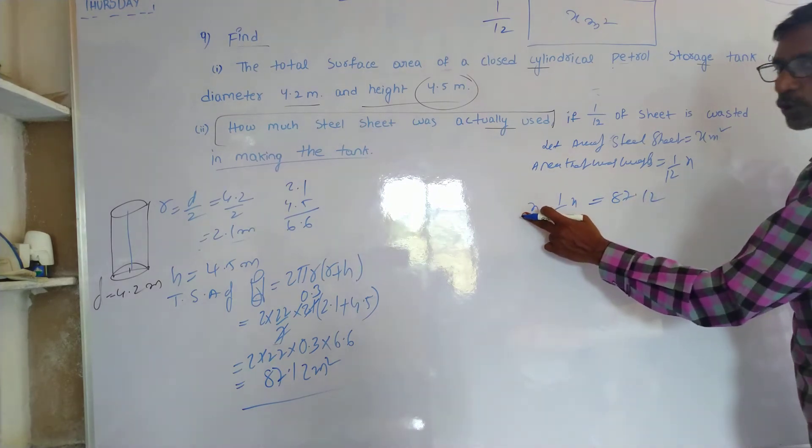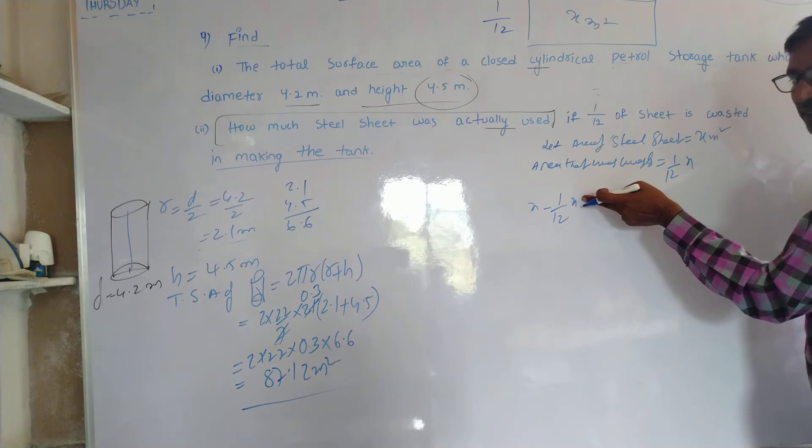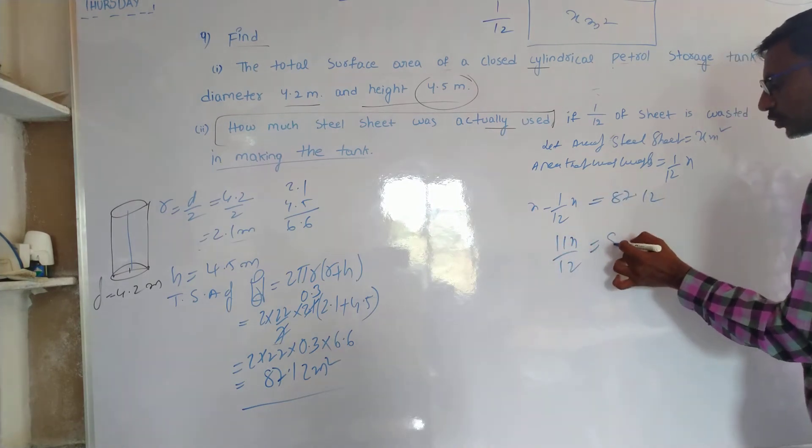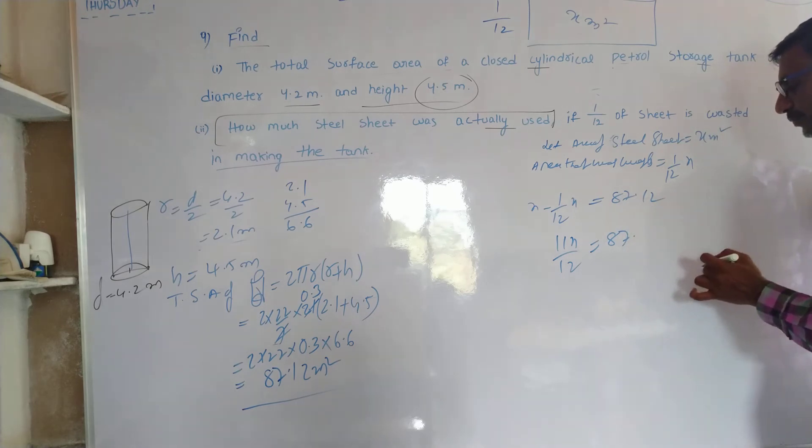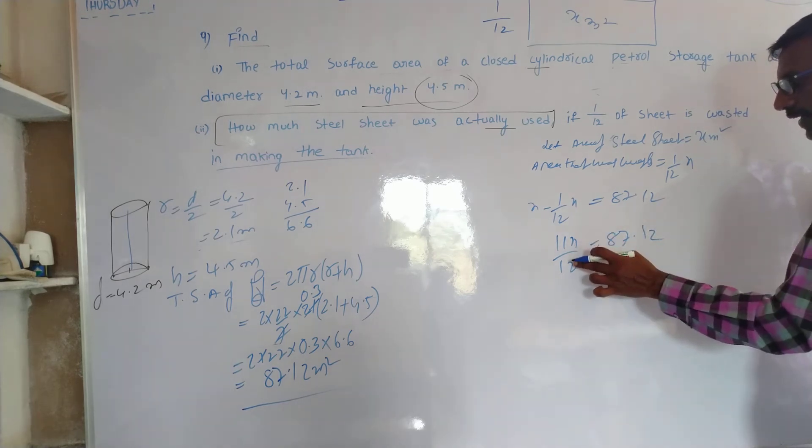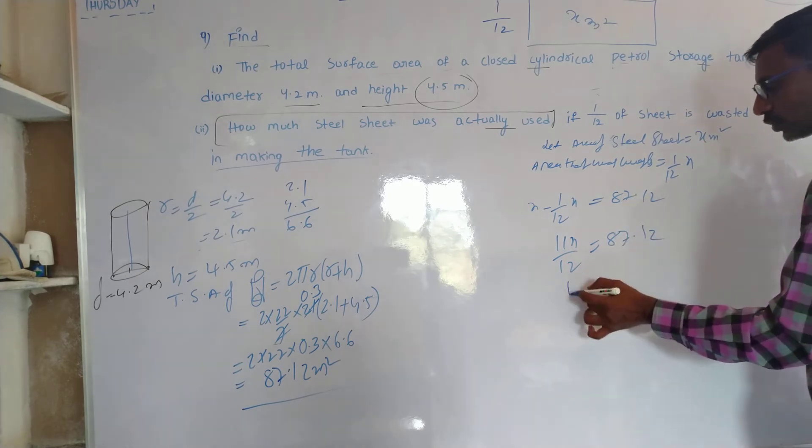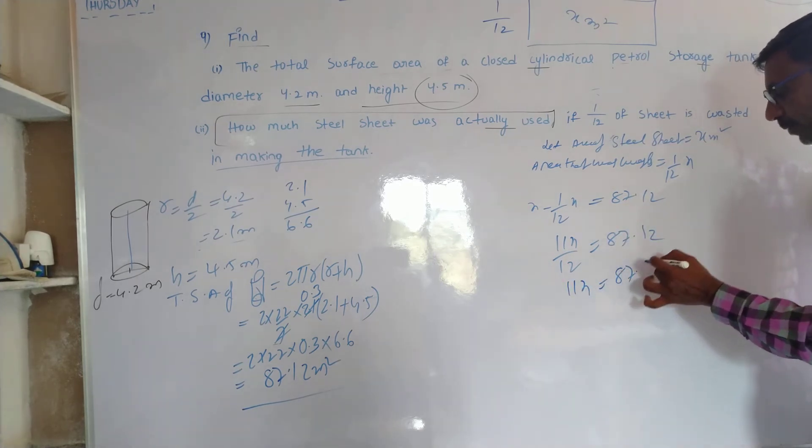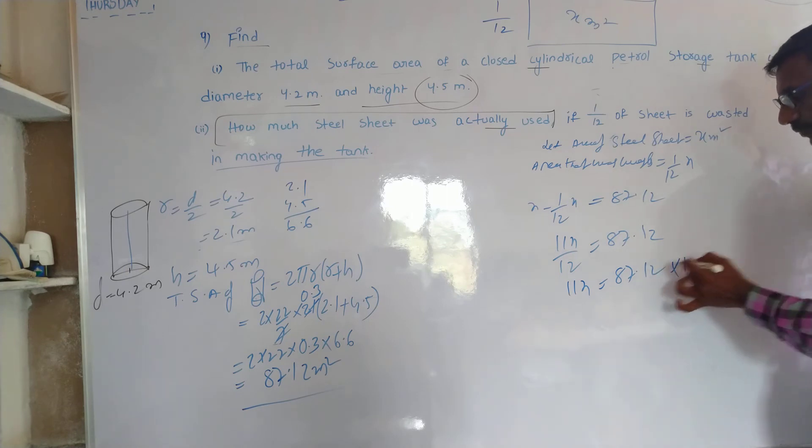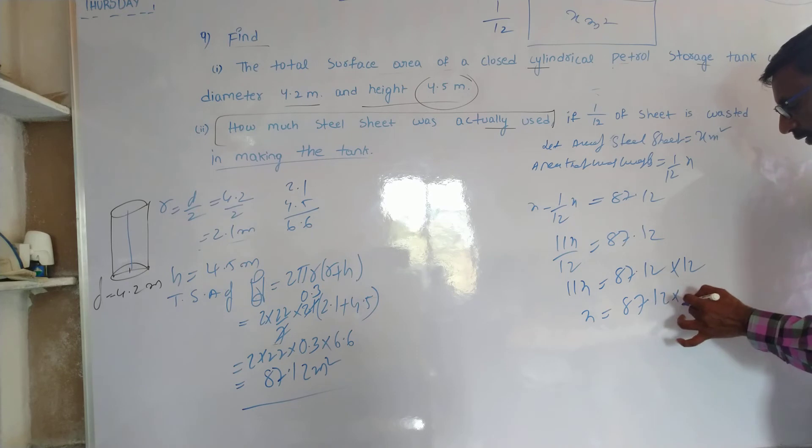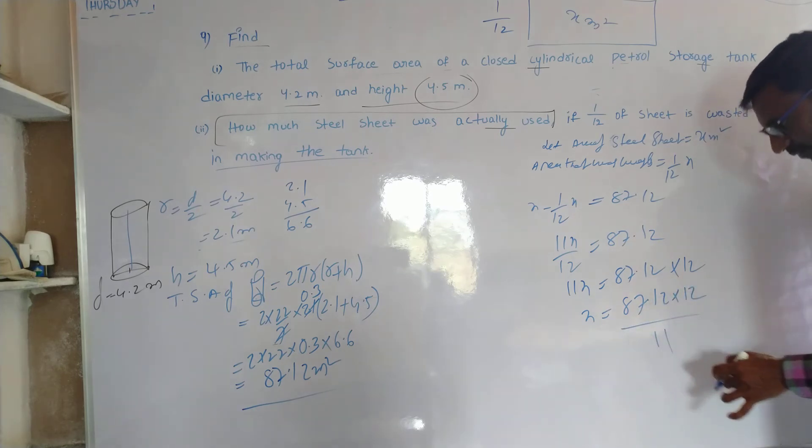12 into X is 12X. So 12X minus X, 11X by 12 is equal to 87.12. If 12 is divided, X is equal to 87.12 into 12 by 11.